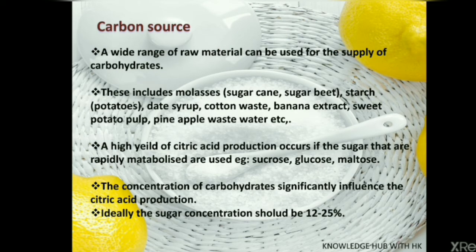Moving on to carbon source: a wide range of raw materials can be used for the supply of carbohydrates. This includes molasses of sugarcane and sugar beets, starch of potatoes, date syrups, cotton waste, banana extract, sweet potato pulp, pineapple, and waste water. High yielding citric acid production occurs if rapidly metabolized sugars are used, e.g. sucrose, glucose, maltose. The concentration of carbohydrates significantly influences citric acid production. Ideally, the sugar concentration should be around 12–25%.